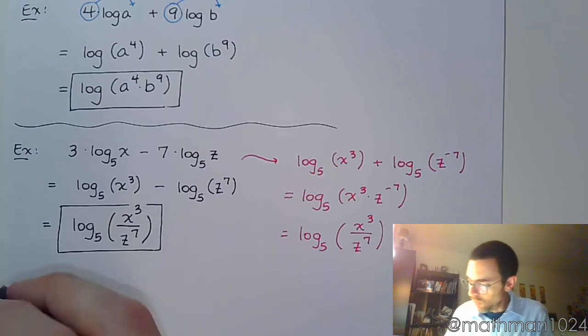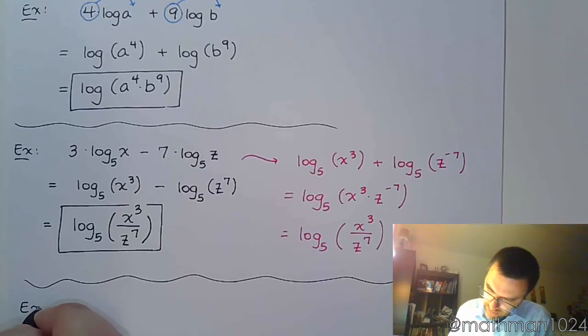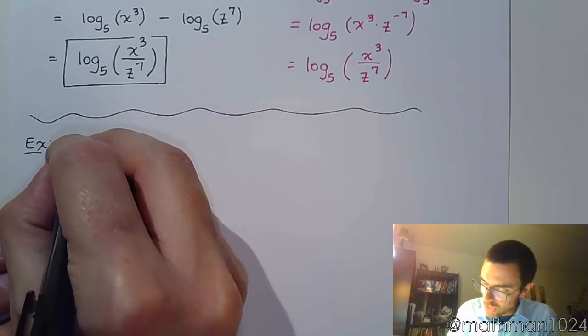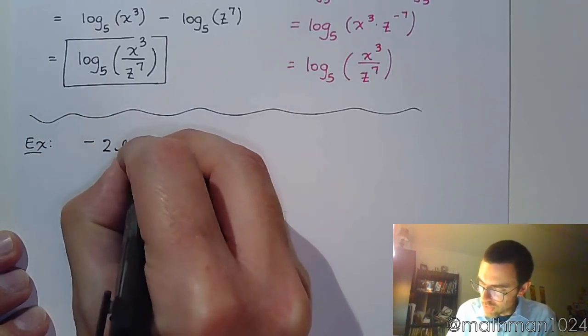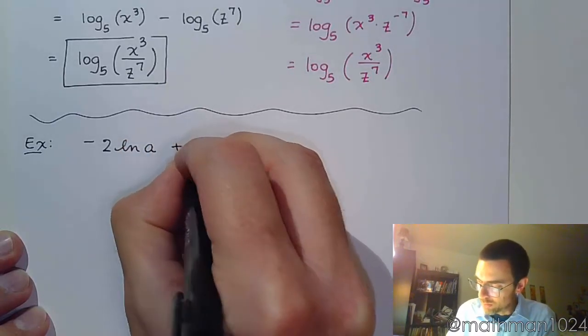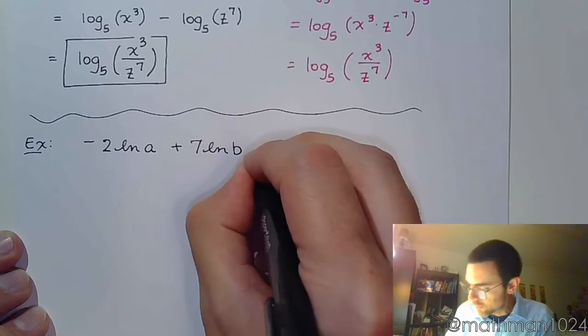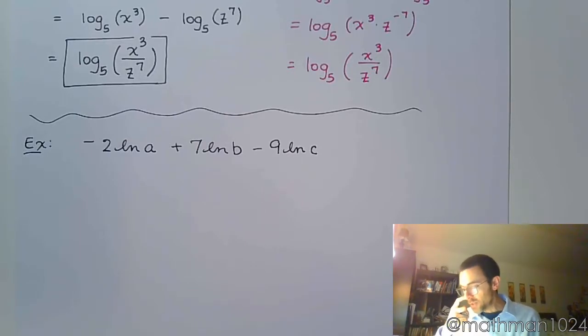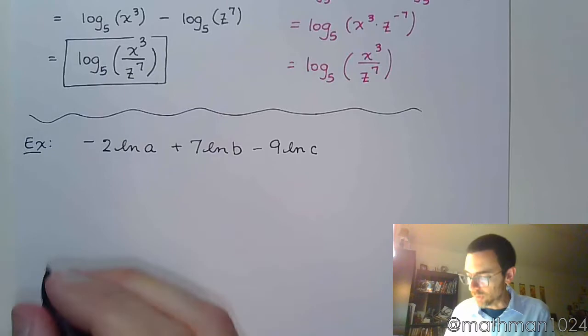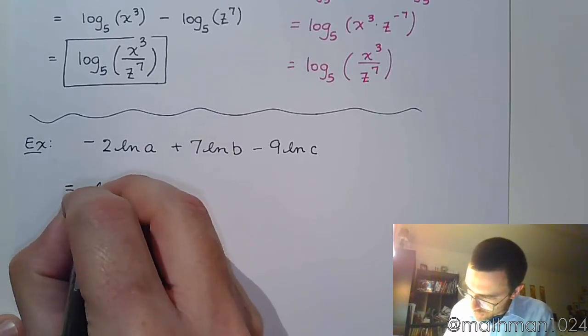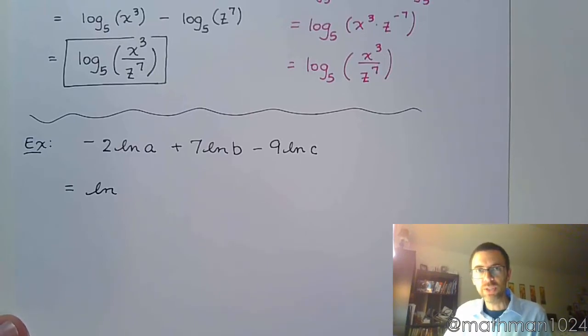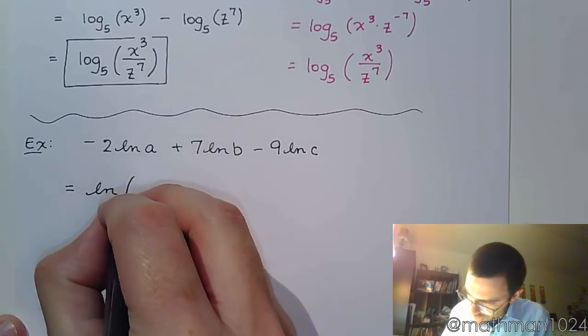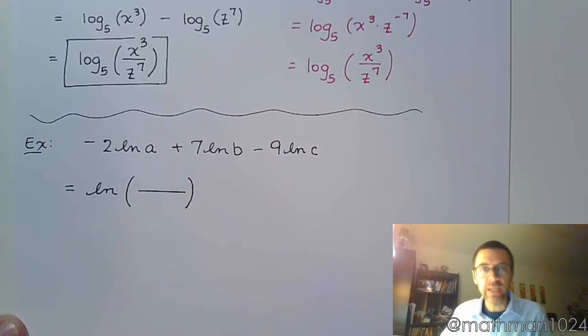Let's do one last example here. Negative 2 times the natural log of a plus 7 times the natural log of b minus 9 times the natural log of c. All of these guys are the exact same type of log, the natural log we were talking about before. So this is going to be the natural log of, let's see what we have here. I have some positive coefficients and some negative coefficients, so that tells me I will have a quotient inside.